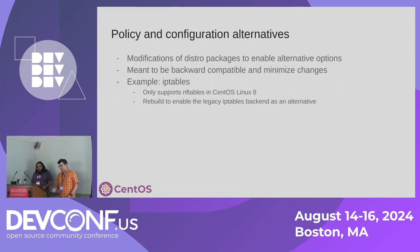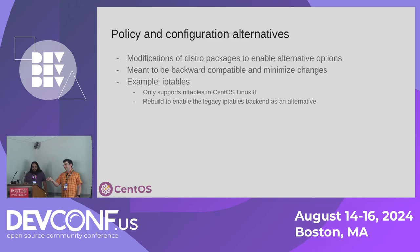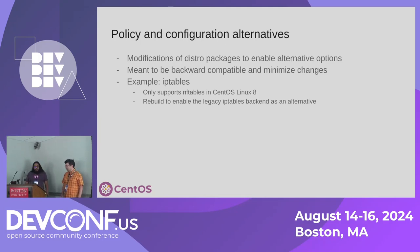Another use for the SIG is offering packages where we want a policy deviation from what CentOS Stream ships. One example was iptables with legacy backend support in CentOS Linux 8. A better current example is our QEMU package, where we turn features back on that people need and enable sub-packages and features not present in RHEL. These are still meant to be backwards compatible and as small as possible, but when meaningful, we offer extra options.